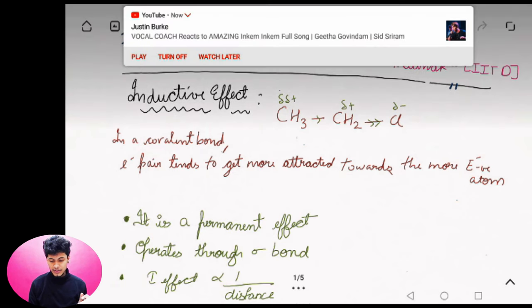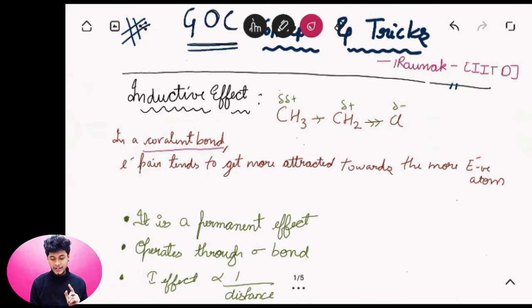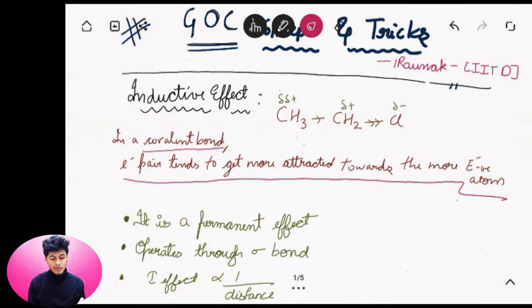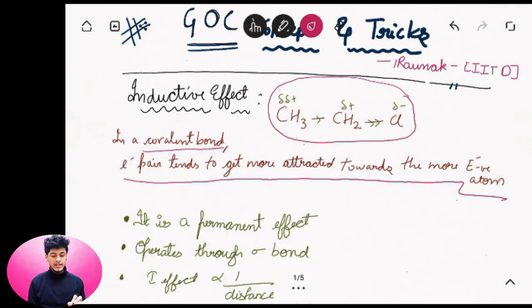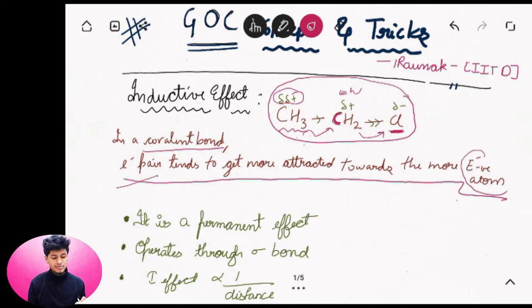If we talk about Inductive Effect — as you can see — in a Covalent Bond, there is a Partial Negative charge on one atom and a Partial Positive charge on the carbon. This is an Inductive Effect.